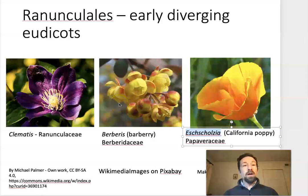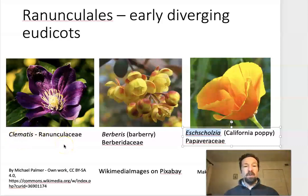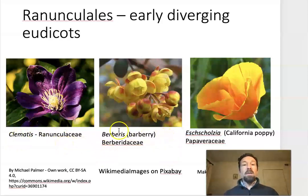In this lecture, we will talk about the order Ranunculales. This is one of our earliest diverging lineages within the eudicots. We will be discussing three families. We'll discuss Ranunculaceae, the family that gives the order its name. This is the Buttercup family, and one member of that family is Clematis, which is a popular garden vine. We also will discuss the Barberry family, Berberidaceae, and these flowers are from Berberis, the genus that gives the family its name.